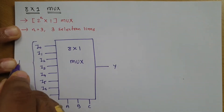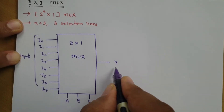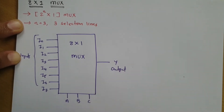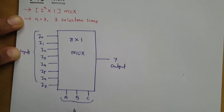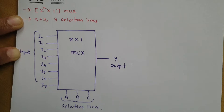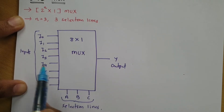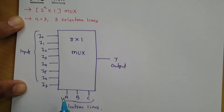These are my inputs, this is my output, and these are my selection lines — that is how the block diagram is formed. Now let us understand how this block diagram functions. The functioning is based on transfer of an input to the output, which is controlled by the selection line.